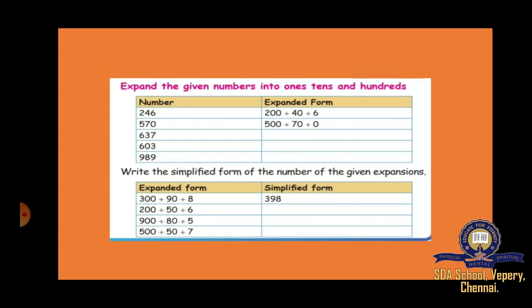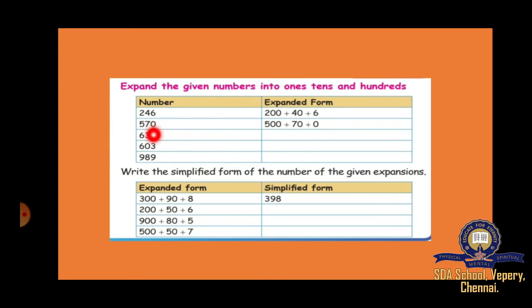Next, expanded forms — you have to expand. For 246: 200 plus 40 plus 6, where 2 is in hundreds place, 4 is in tens place, and 6 is in ones place. For 570: 500 plus 70 plus 0, where 0 is in ones place. Like this you have to write.